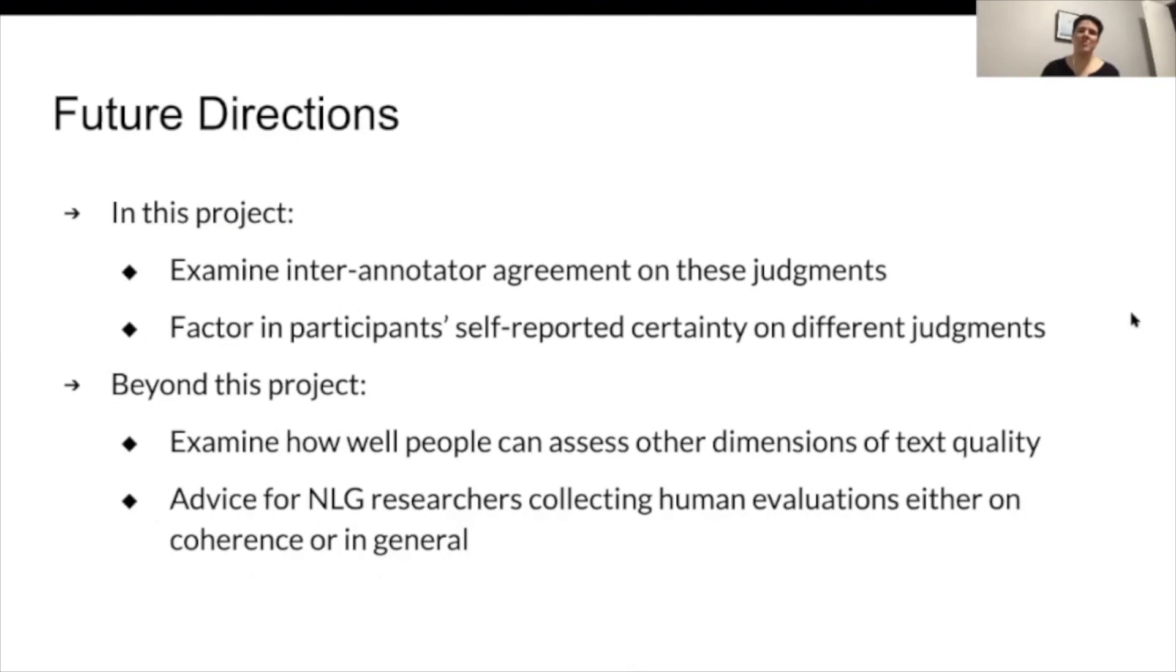So for some future directions for this project, because we're still not done with it, we plan to examine inter-annotator agreement on these judgments and factor in participants' self-reported certainty. And then beyond this project, we want to continue examining how well people can assess other dimensions of text quality and provide some advice for NLG researchers collecting these evaluations, either on coherence or in general. Thanks!